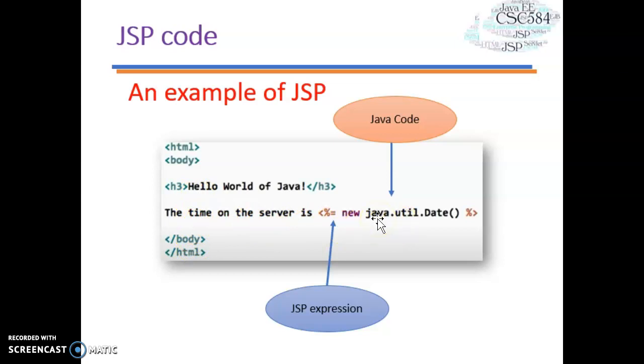This is a little bit of Java code that starts with JSP expression and followed by the Java code new java.util.date. This is a method. We use equals sign after the JSP start code to display the date time using the Java code.